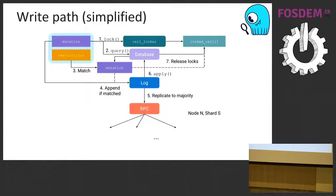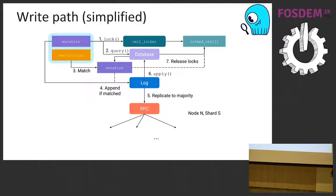Here is the simplified write path. A mutation — how Scylla represents write requests — is idempotent and commutative, accompanied by a set of restrictions to compare against disk. We first apply locks to block concurrent operations, query the database for the current value, compare against the restrictions, and if they match, append the entry to the log. We then communicate with followers to replicate that log entry. Once replicated to a majority, the entry is committed and applied to the database.